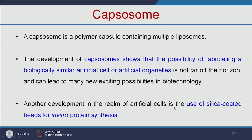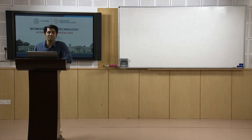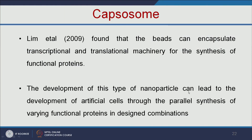Another development in artificial cells is the use of silica-coated beads for in vitro protein synthesis. Lim et al. found that beads can encapsulate transcriptional and translational machinery for the synthesis of functional proteins. These silica beads contain all the enzymes for transcription and translation, acting as transcription and translation machinery. The development of this type of nanoparticle can lead to efficient artificial cell development.